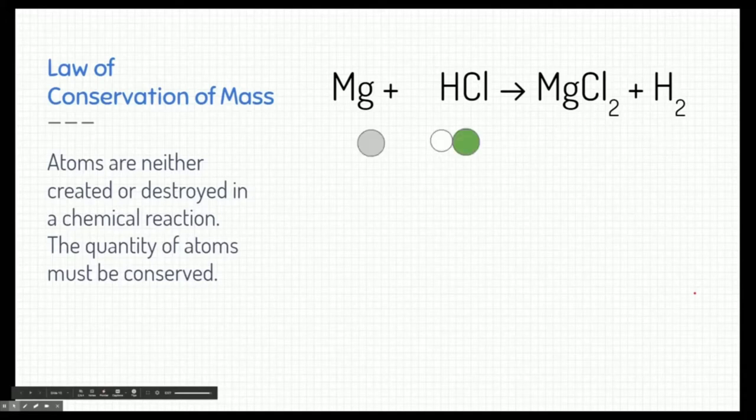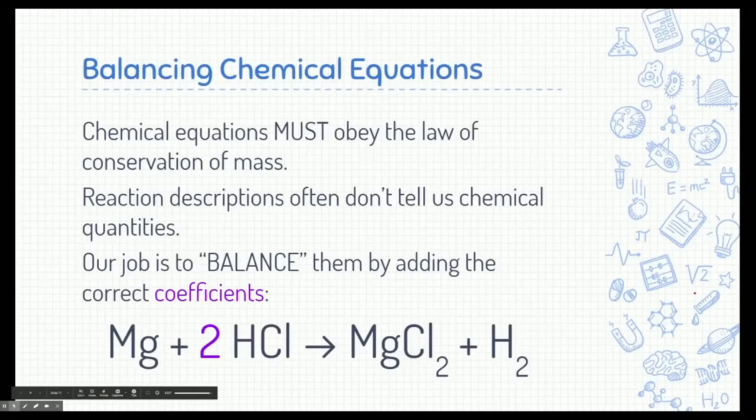Instead, we got to think about the quantities of particles. One thing we haven't written are the coefficients. In fact, instead of having one hydrochloric acid, what if we had two hydrochloric acid molecules or two moles of hydrochloric acid? If we were to do this reaction now, taking the magnesium and the chlorine and combining them together and the two hydrogens and combining them together, this makes a lot more sense. And this reaction obeys the law of conservation of mass.